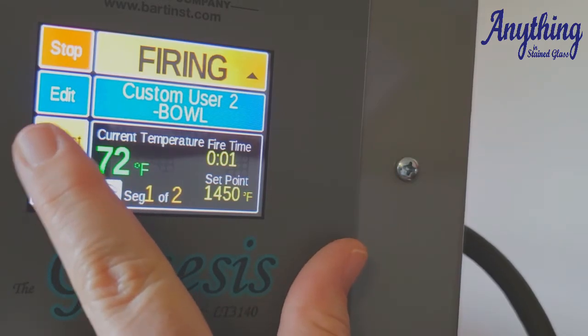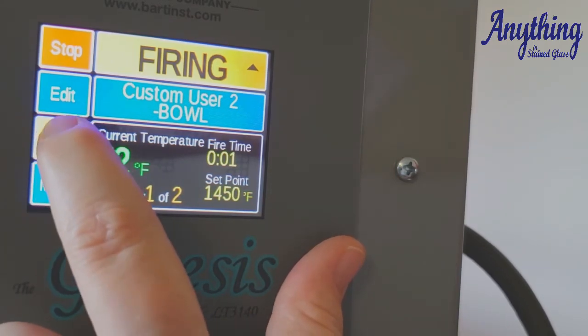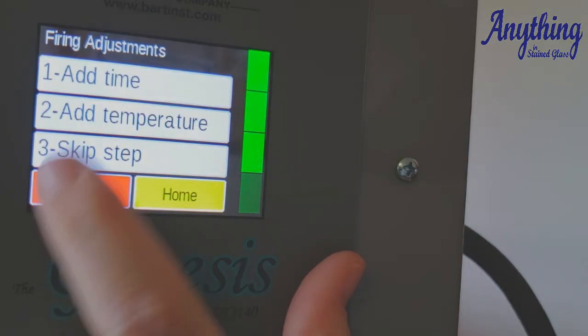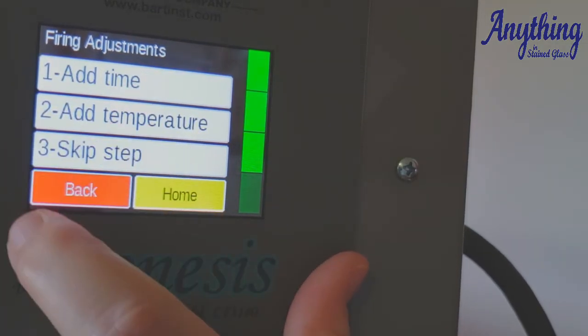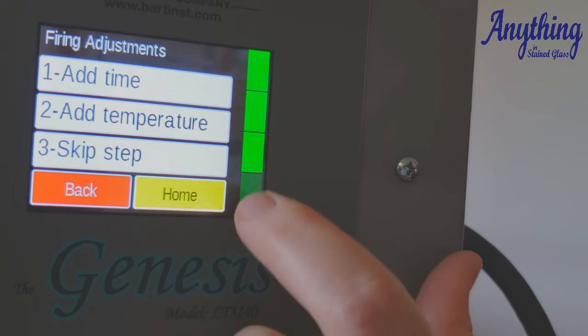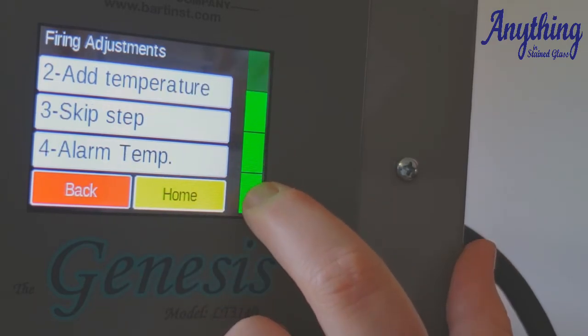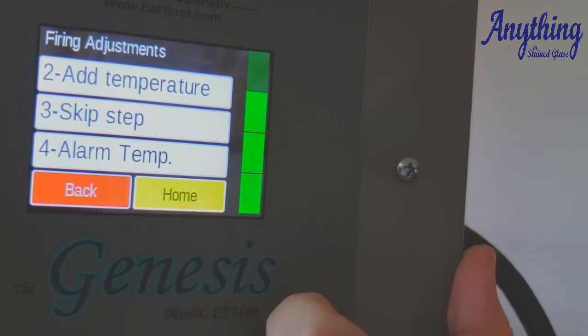So if you need to change things while you're firing, you can just press the adjust button. It allows you to add hold time. It allows you to add temperature to your hold, and it allows you to skip a step. It also allows you to change your alarm temperature.